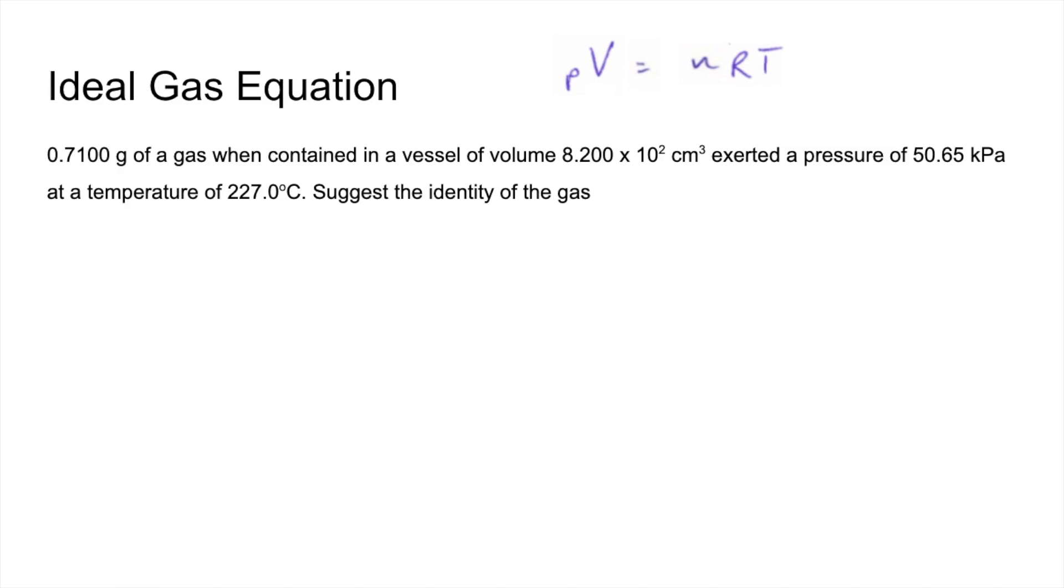So there's the ideal gas equation. We're going to rearrange for N to calculate the moles of gas and then we're going to use that mass there to work out the MR and then we can get an identity for the gas from that. So rearranging for N gives us that. And I've been a bit nasty with this, so every single term is in the wrong unit. So we'll talk about units as we plug these numbers in.